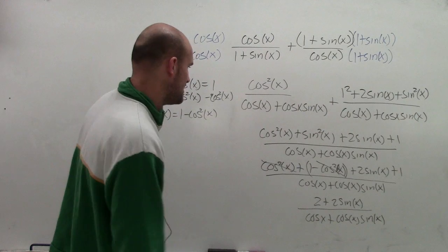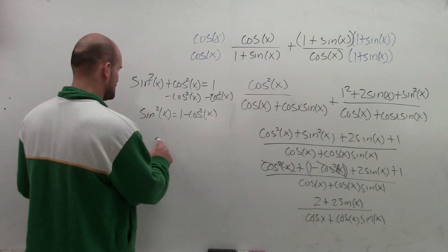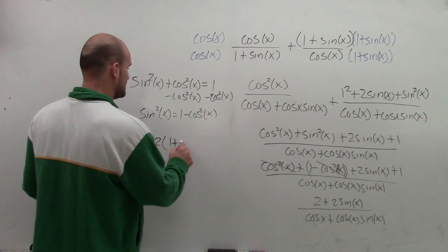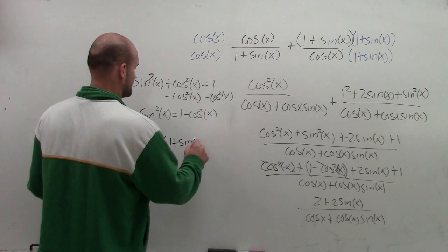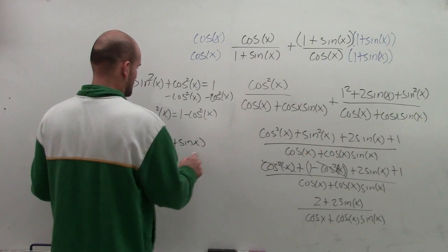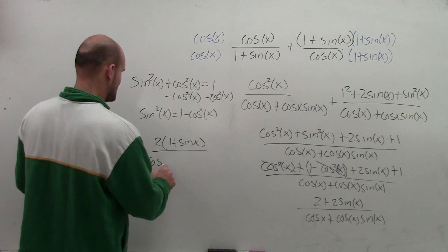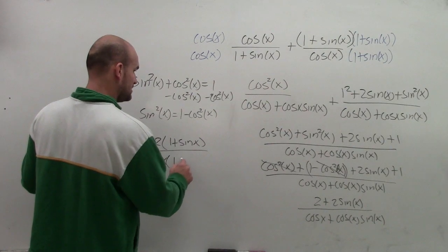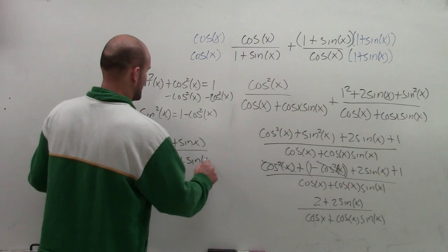And one thing I look at, let's see if I factor out a 2. If I factor out a 2, I'm going to be left with 2 times 1 plus sine of x. And then over here, if I factor out a cosine of x, I'm going to be left with 1 plus sine of x.